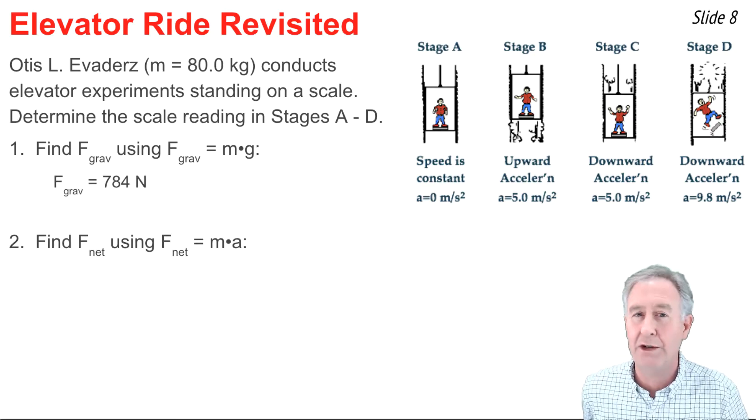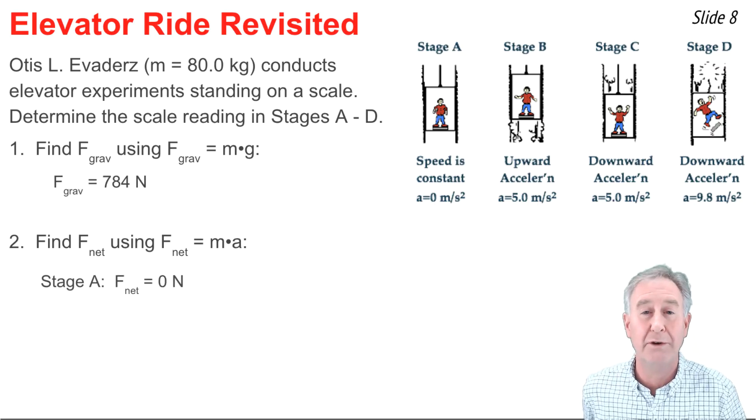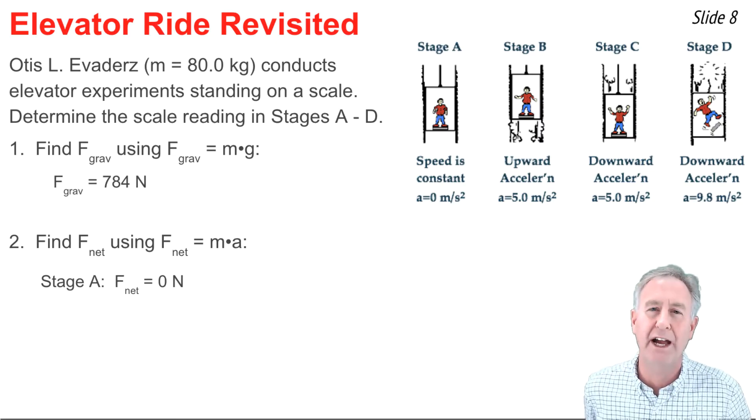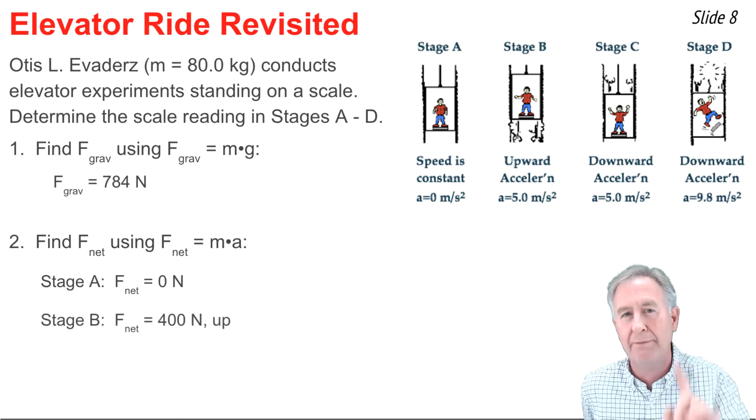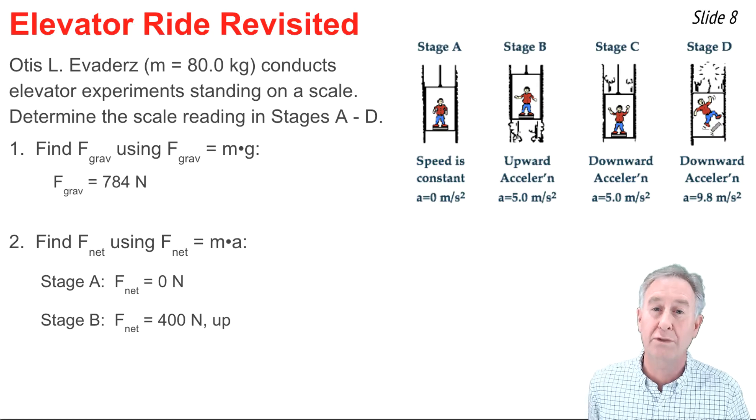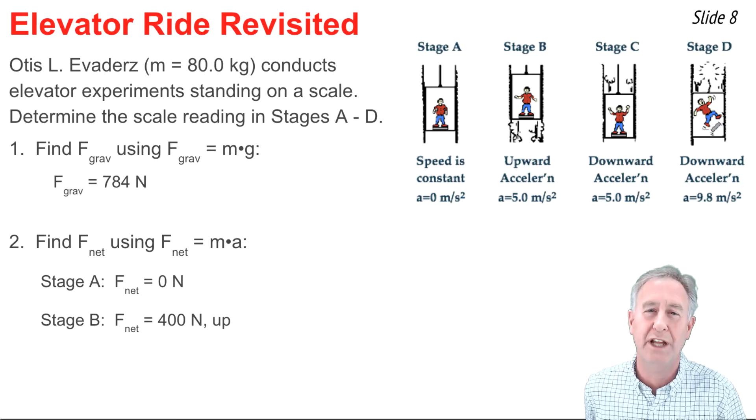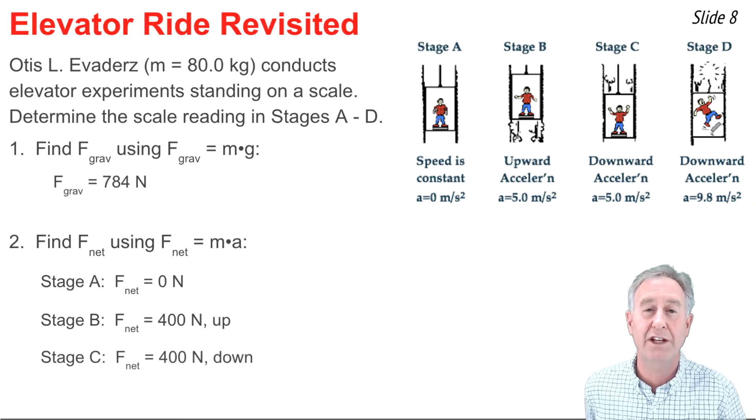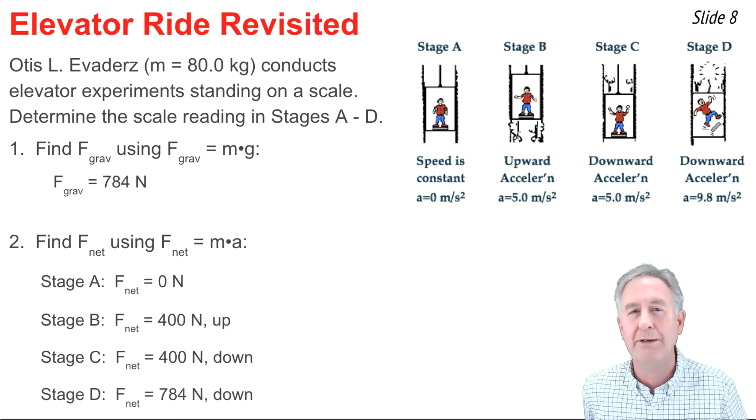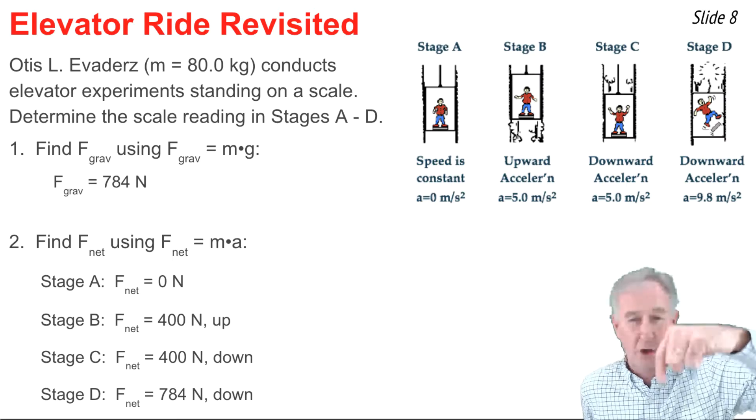In stage A, there's no acceleration, so the net force is zero. In stage B, the acceleration is 5 meters per second squared up, so I'm going to go 80 times 5 and I get 400 newtons up for the net force in stage B. In stage C, the net force is 400 newtons down, since the acceleration is 5 meters per second squared down. And finally in stage D, where the acceleration is 9.8, I can go 80 times 9.8 and I get a net force of 784 newtons down.